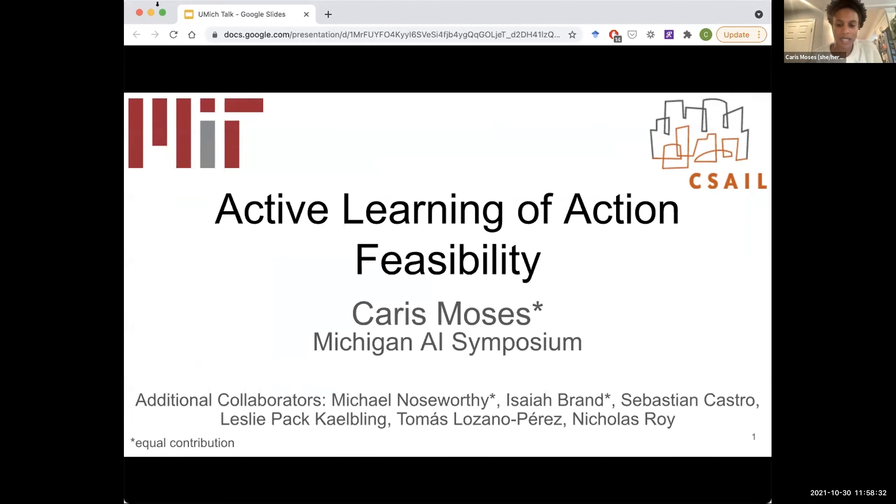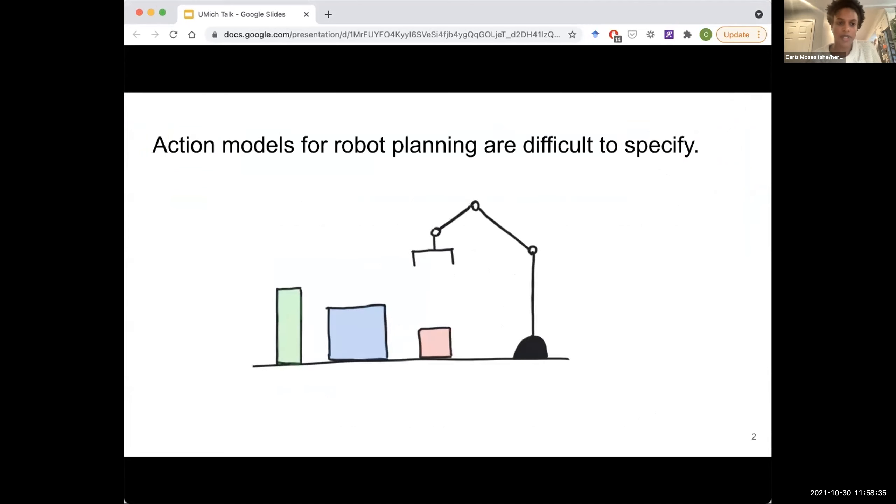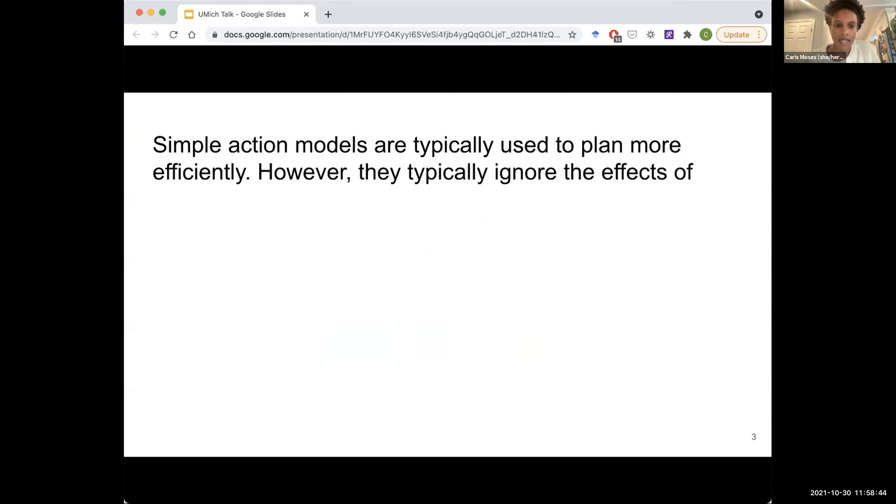Hi, everyone. My name is Karis. And today I'll be talking about my latest work. And so this work is motivated by the fact that designing models for planning for robots can be very challenging as these models can be pretty complex. So to plan more efficiently, people usually specify some sort of simplified model, which maybe ignores the effects of noise, such as if this robot is trying to place this block, it might have some noise in actuation or poorly modeled object properties. So in this example, if it's trying to place the green block and we're not modeling the center of mass, then we're not going to have any chance of accurately modeling whether this tower will be stable or not after the placement takes place.